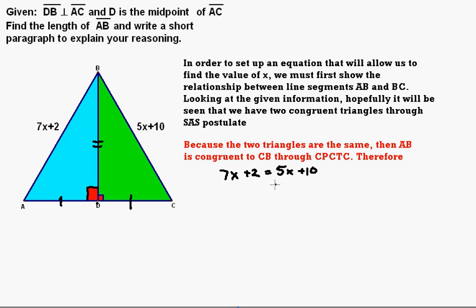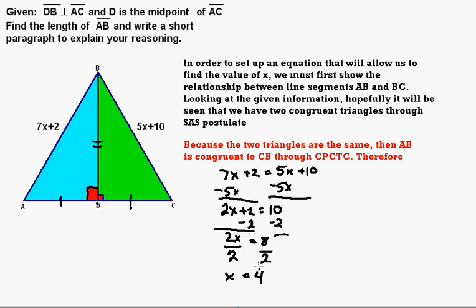So at this point now we're going to solve for X. If I subtract 5X from both sides of the equation, I get 2X plus 2 equals 10. If I subtract 2 from both sides, now I have 2X is equal to 8. And then if I divide both sides by 2, then I get X is equal to 4.